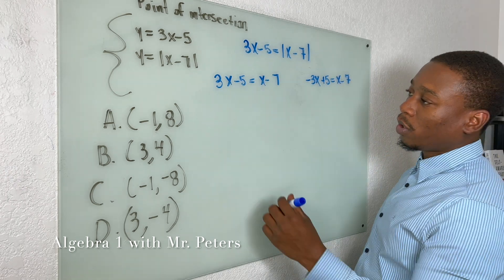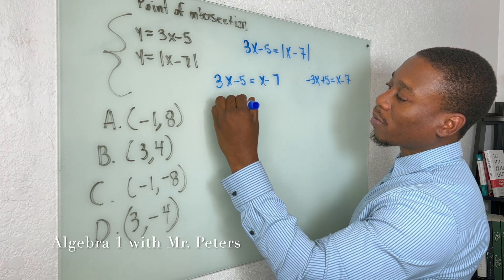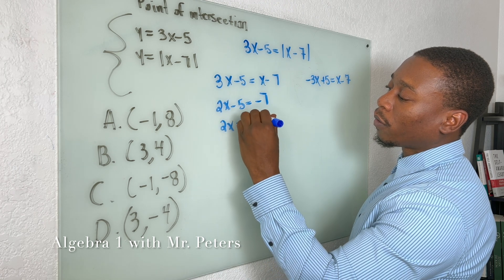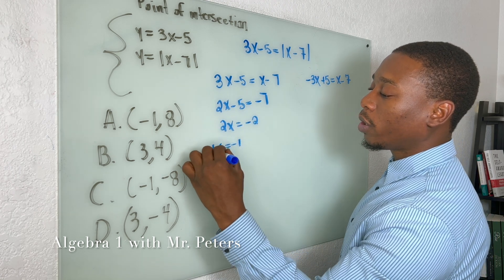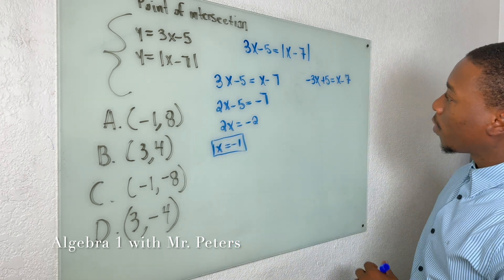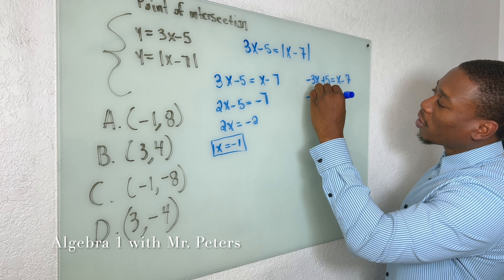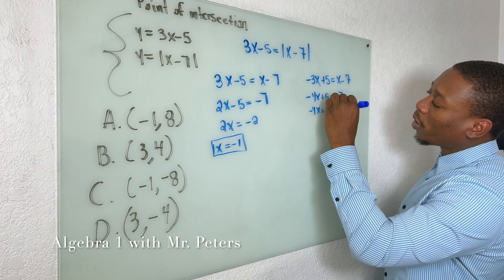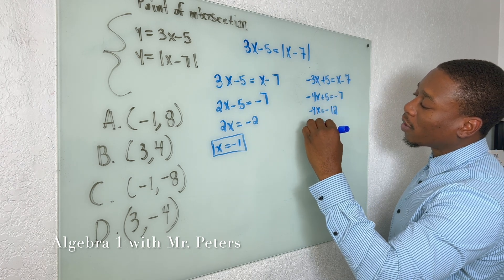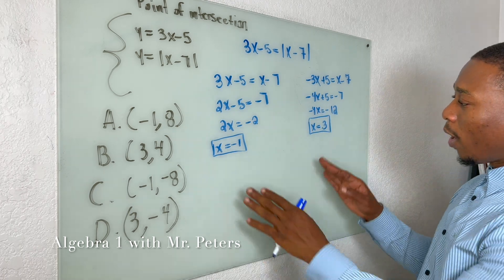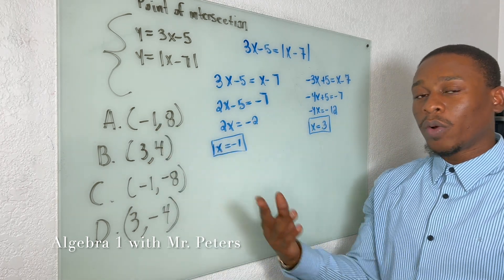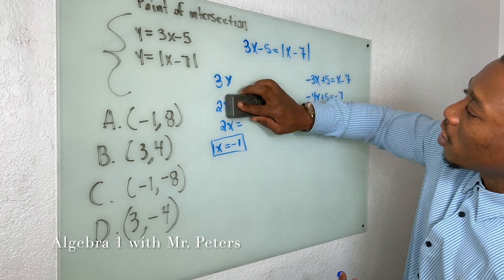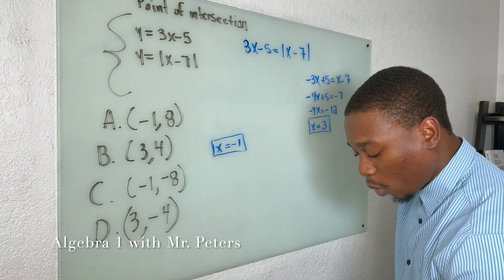So our first equation will stay the same: 3x - 5 = x - 7. But our second equation, 3x is going to change right? So we have -3x, -5 turns to positive 5, and x - 7 stays the same. Now let's solve this first one. When I combine my x's, I'm going to have 2x - 5 = -7. Bring 5 over, we're going to get x = -1. Let's just remember that answer.